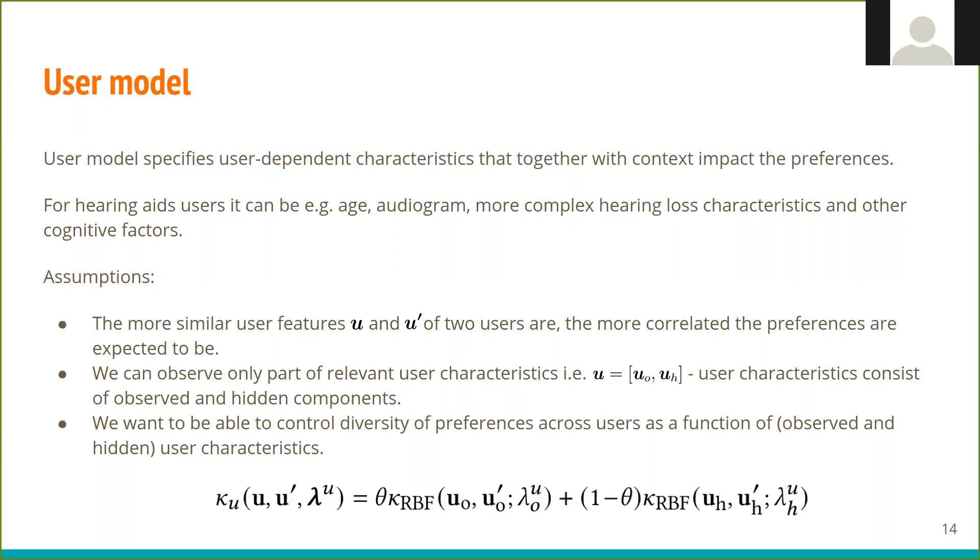We achieve this by defining user kernel that is a weighted sum of two RBF kernels, where lambda parameters control the diversity of preferences, and theta controls the balance between the contributions of observed and hidden components.